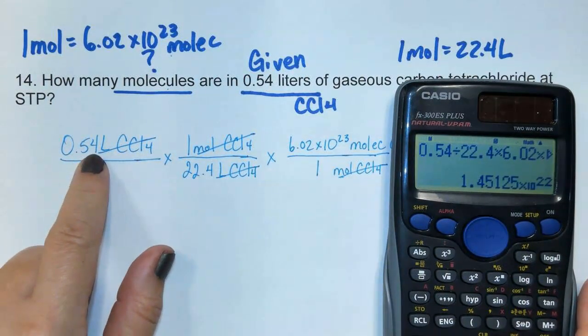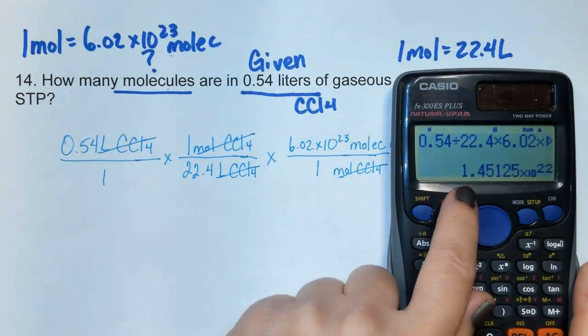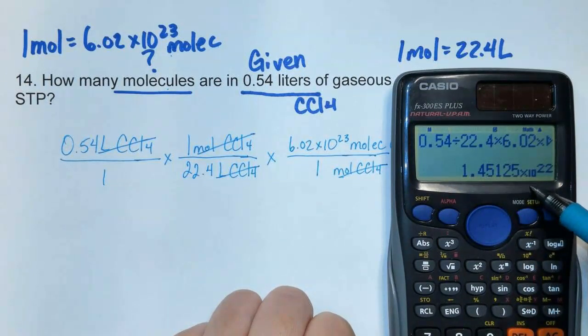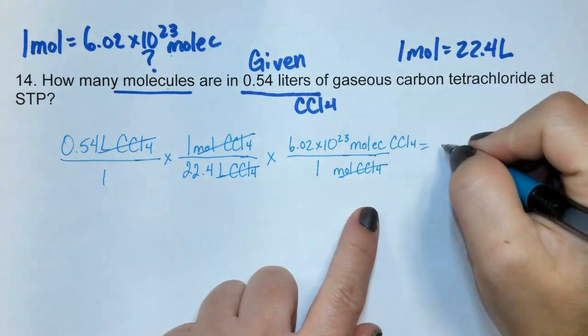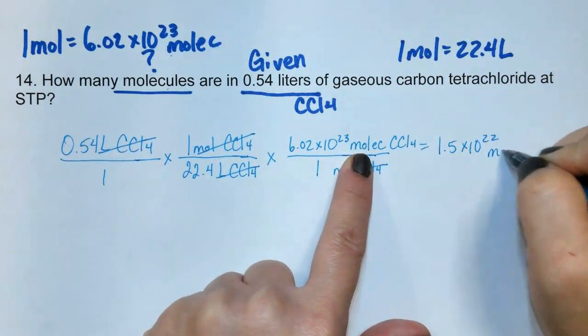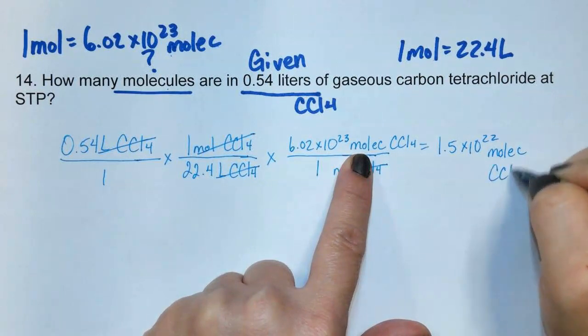We have 1, 2 sig figs to start, so we need 1, 2 sig figs to end it. And that 4 will round up to 1.5 times 10 to the 22. 1.5 times 10 to the 22, and the unit is molecules of CCl4.